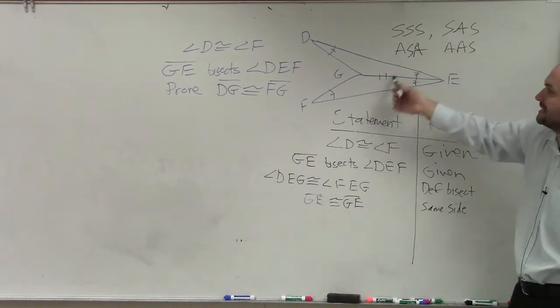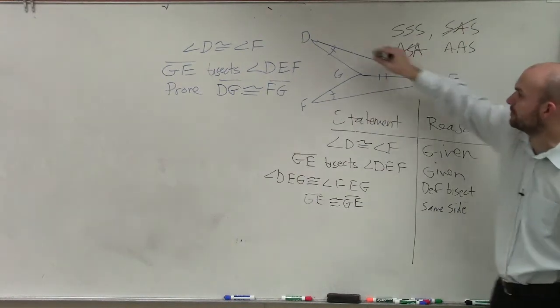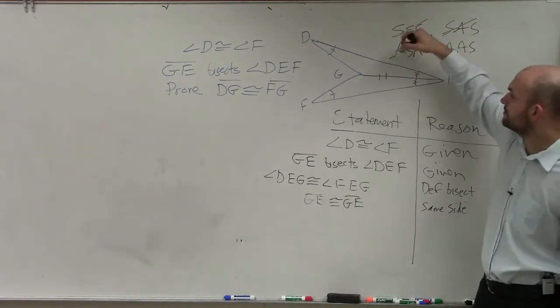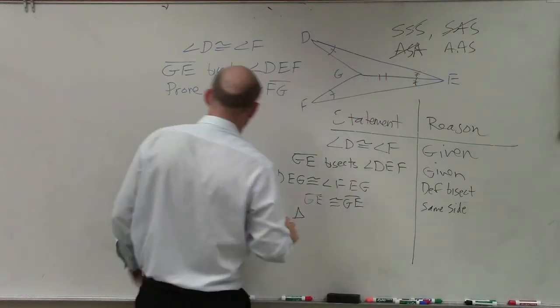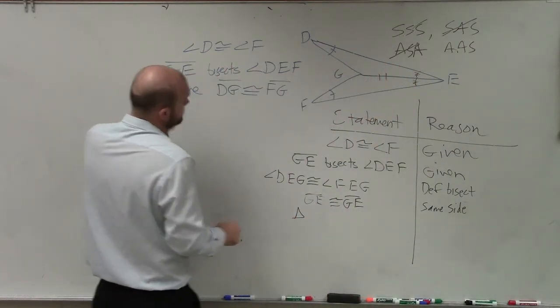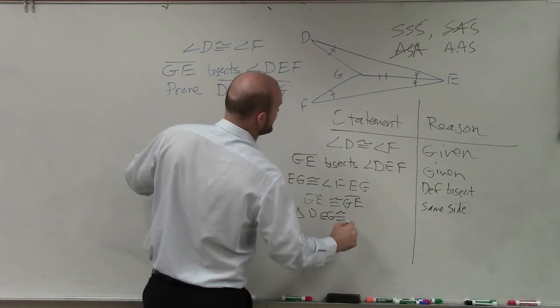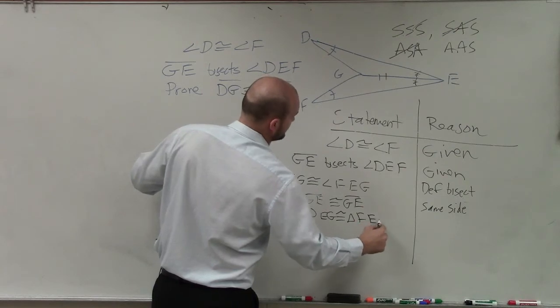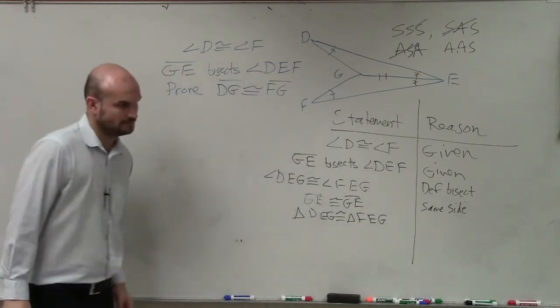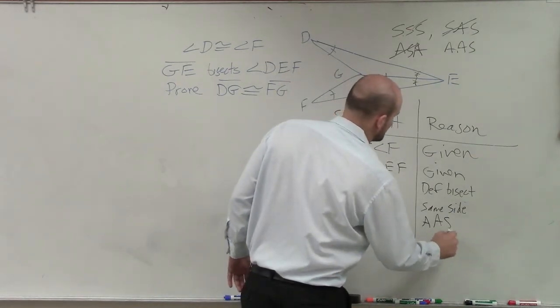Well, we don't have any included angles or sides, so those two don't work. We don't have all three sides, so that doesn't work. But here we have angle, angle, side. So now I can prove that triangle DEG is congruent to triangle FEG. And why? Because that's angle, angle, side.